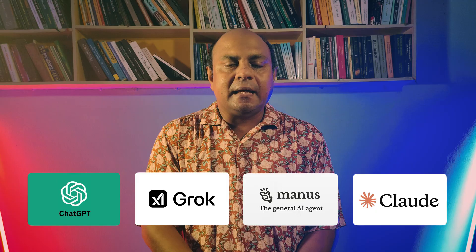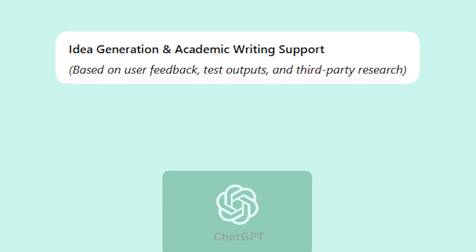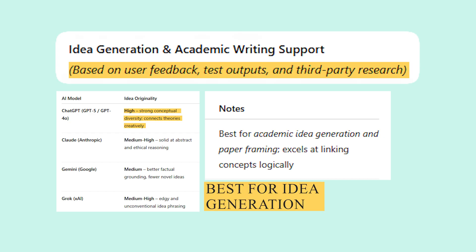My dear learners, first of all there are so many AIs available — free AI like ChatGPT, Grok, Claude, and also Manus AI. These different AIs can be used for different purposes. In my opinion, ChatGPT is the best place to start with your research idea, because ChatGPT can give you a very precise research article writing idea which other AIs cannot give you as properly. So ChatGPT is best for writing your research idea and giving you a clear direction.